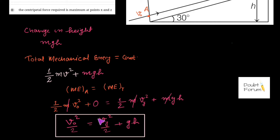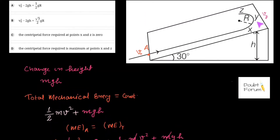We now need to find Vy using the condition stated in the question: at the highest point Y, the centripetal force required is provided entirely by the weight of the object. The weight Mg acts vertically downwards. Since the ramp angle is 30 degrees, the angle between the weight direction and the direction toward the center of the semicircular path is 60 degrees (i.e., 90 − 30 = 60 degrees).